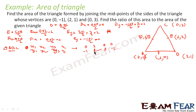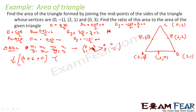The whole thing we divide by 2. Area is 1 by 2 into: 0 into 1 is 0, plus 2 into 3 is 6, plus 0 into minus 1 is 0, minus: minus 1 into 2 is minus 2, plus 1 into 0 is 0, plus 3 into 0 is 0. So this becomes 1 by 2 into 6 minus minus 2, that is 8 by 2, which is 4 square units. This is the area of triangle ABC.